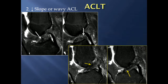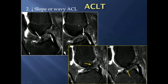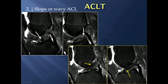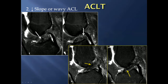The second sign is where the entire ACL has a decreased slope or a wavy appearance. Typically, to look at the entire ACL, you want to look at two consecutive images that go through it. On this one you've got a decreased slope of the ACL, and on this one a wavy appearance on both images through the entire ACL — both are complete ACL tears.